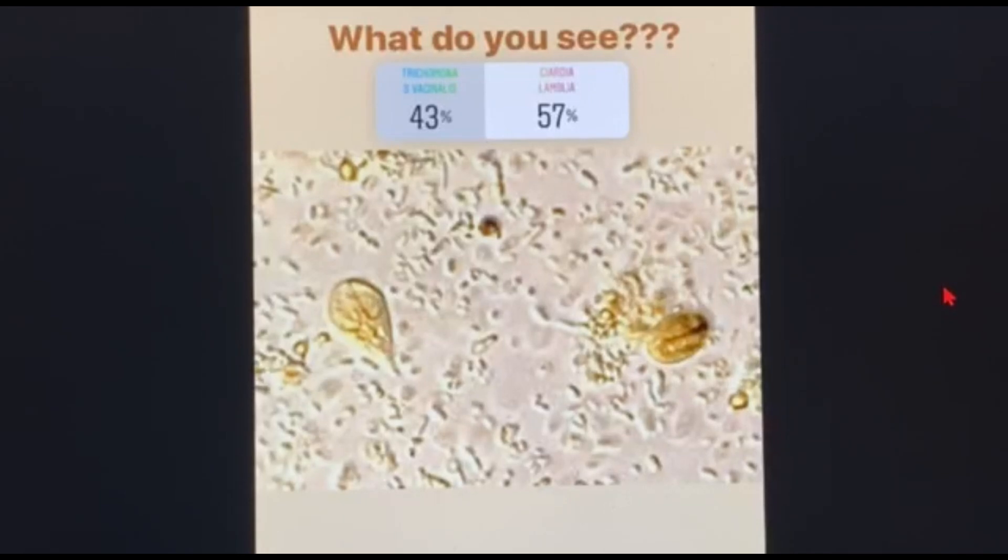Hello friends, we meet today again for yet another differentiation in spotters. This is between two protozoans. Now it is not that difficult to differentiate between a Trichomonas vaginalis and Giardia lamblia.